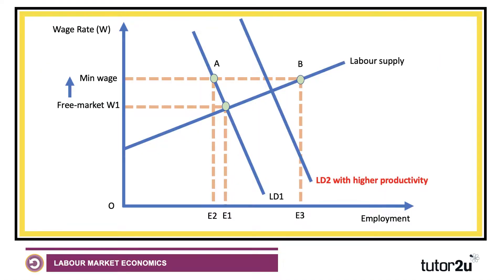I've drawn this as follows: the minimum wage goes up, and ordinarily employment would fall to point A — from E1 to E2. But notice that if there is more productivity, the value of the output workers are producing has gone up. In theory, employers might be more likely to employ labour, and so at the minimum wage they might actually employ E4 workers instead of E2. If productivity goes up, the minimum wage might actually cause an increase in employment.